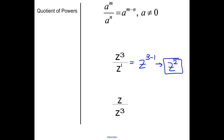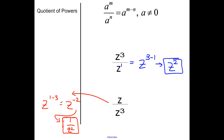One way to approach it: check which exponent is larger and whether it's on top or bottom — that tells you where the result will end up. So for z to the first over z to the 3rd, doing 1 minus 3 gives z to the negative 2nd, which equals 1 over z squared. Or, noticing the larger exponent is on the bottom, subtract 3 minus 1 and place it on the bottom: 1 over z squared. That second approach gets easier with trickier problems.